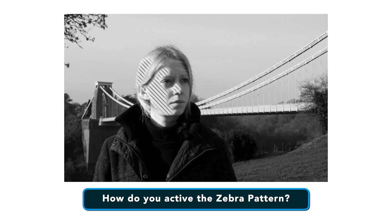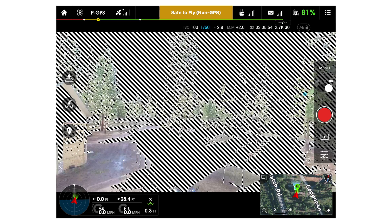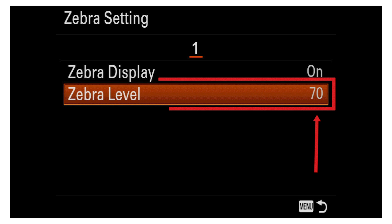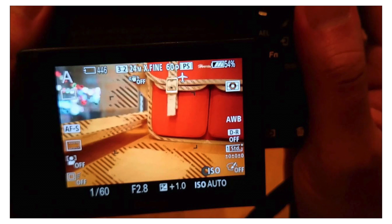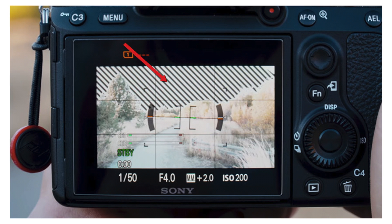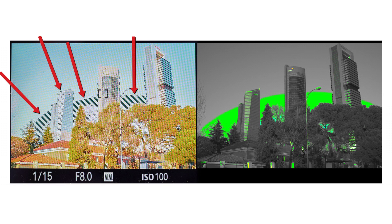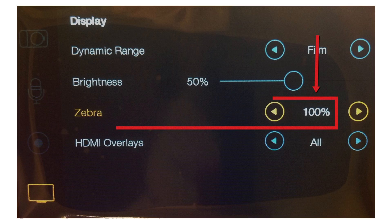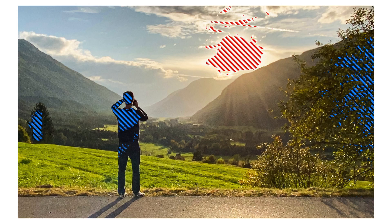How do you activate the Zebra Pattern? The application of the tool is as easy as it gets. All you have to do is activate it on your camera and set a threshold limit. Say you set a limit of 70% — most cameras use percentage values for this purpose. So now when you point your camera towards the scene, any area of the scene which is brighter than the 70% threshold value you set will be highlighted using a Zebra Pattern. Say you want to protect yourself from accidentally clipping the highlights of your images or video — in that case, you can theoretically set the threshold limit to 100% and just keep it there.